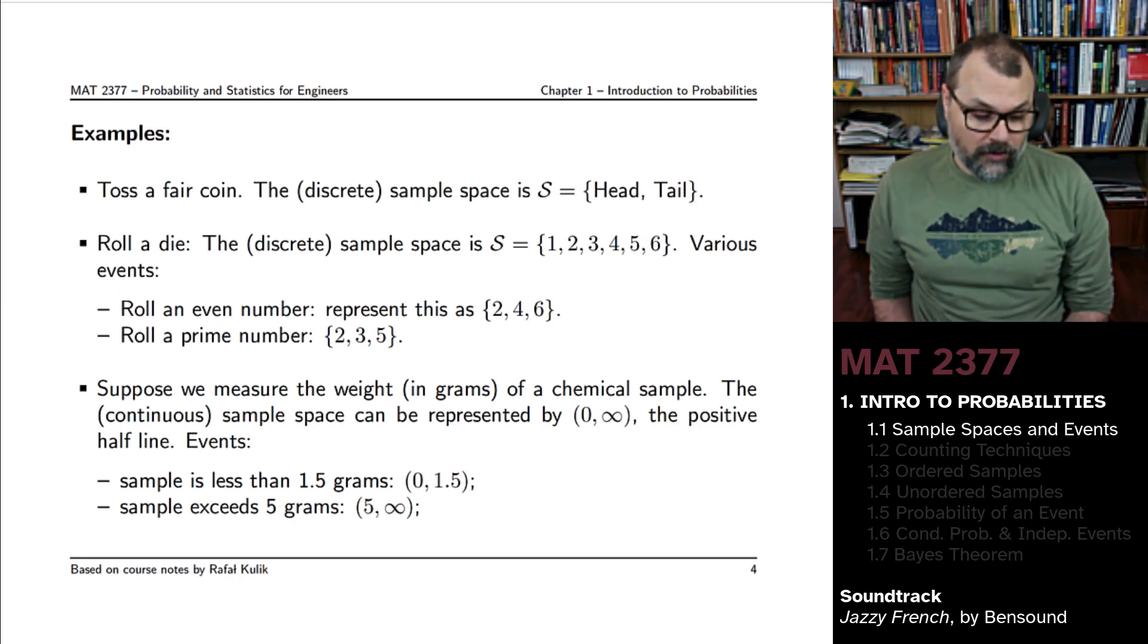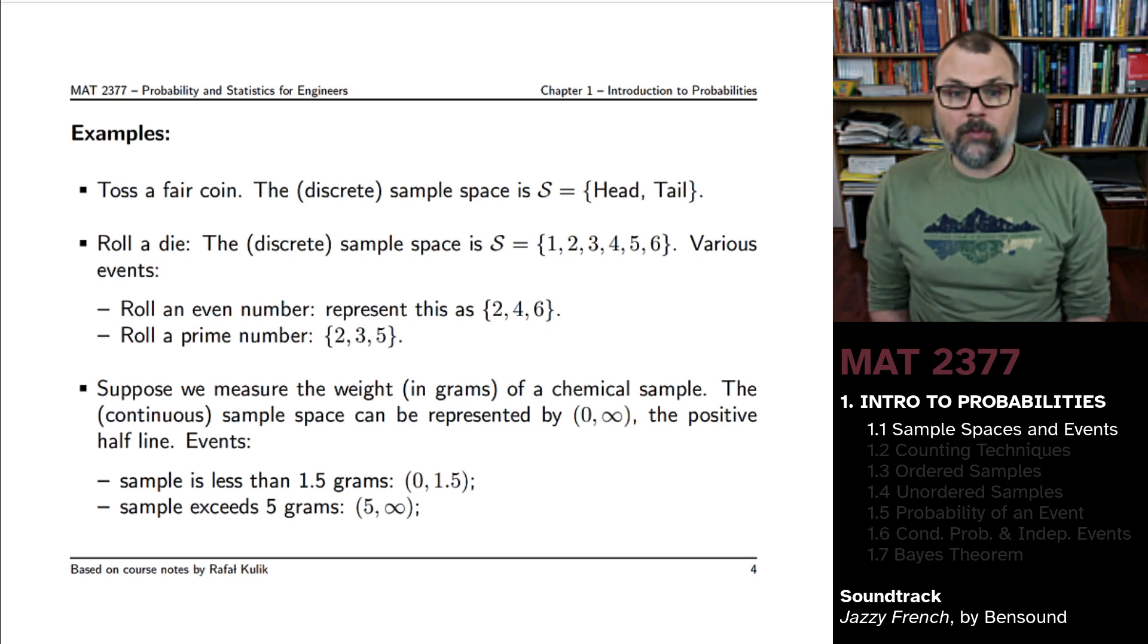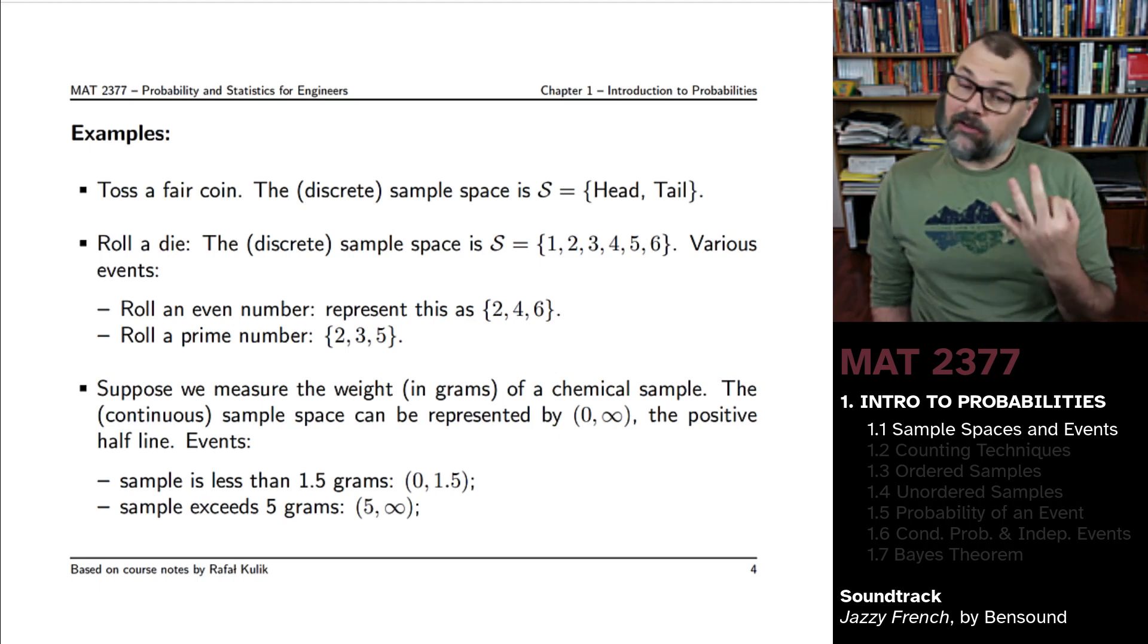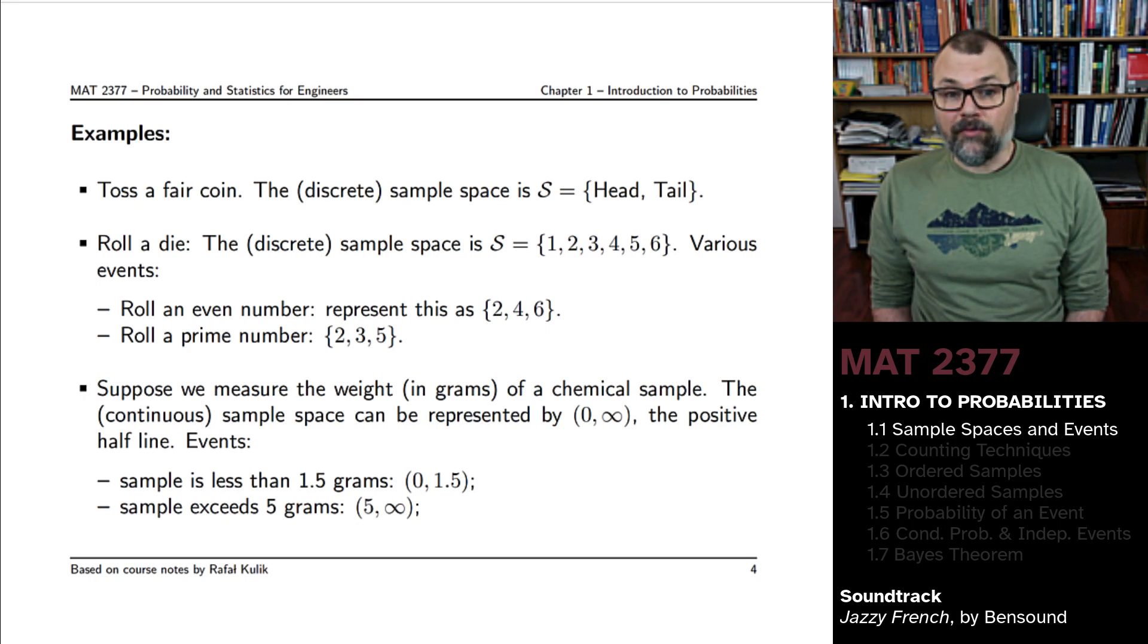You might also be looking at the event where you roll a prime number. Well, the set of outcomes is one, two, three, four, five, six. There's again only three of them that are prime, but it's not the same three. It would be the numbers two, three, and five.